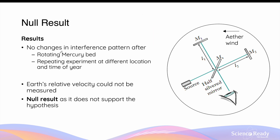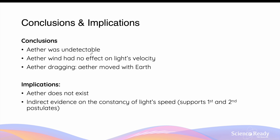To Michelson and Morley's surprise, they observed that there were no changes in the interference pattern after the rotation of their apparatus on the mercury bed. They even repeated the experiment at different locations and times of the year so that Earth's relative velocity would be different as it orbits the sun, but there were still no changes in the interference pattern. Since no changes in the interference pattern were observed, the aim of the experiment — which was to measure Earth's relative velocity — could not be achieved. This was referred to as the null result. Two possible conclusions could be drawn: either the experimental apparatus could not detect the ether wind, or the ether wind did exist but had no effect on light's velocity.